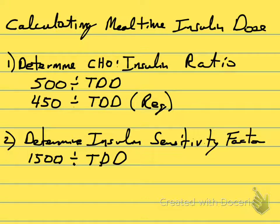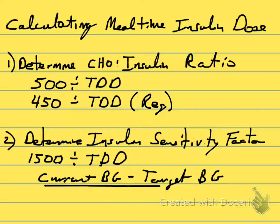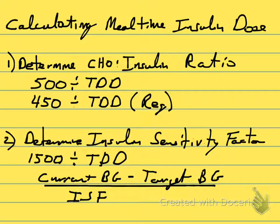So, if we take your current blood glucose and subtract from that your target blood glucose, that's going to tell you how much glucose you are over your target — how high your blood sugar is above your target. If we then divide that by your insulin sensitivity factor (ISF), that tells you how many units of insulin you need to take to cover that overage.